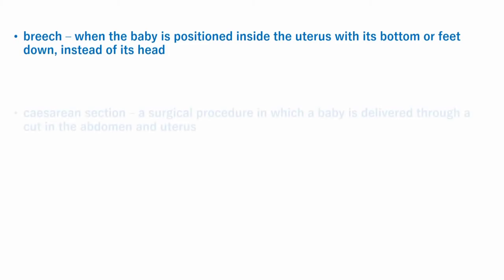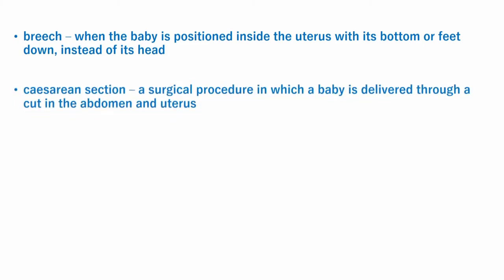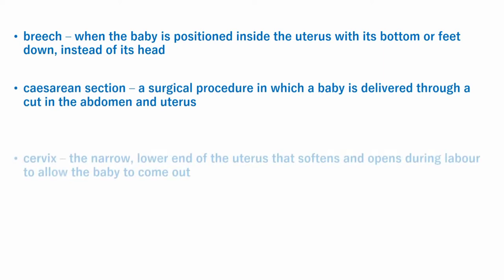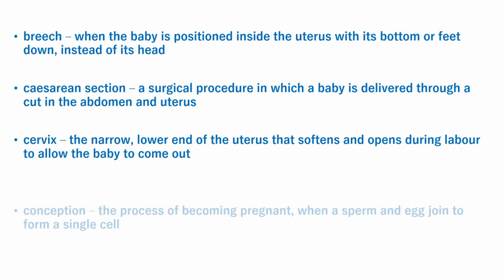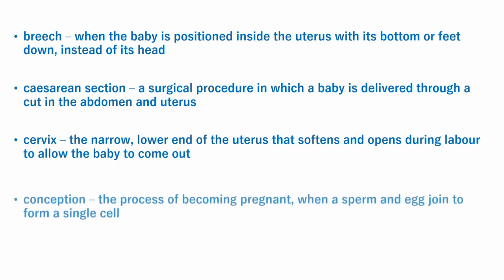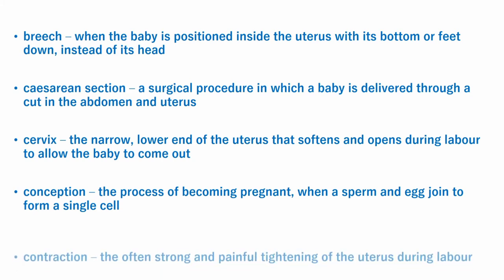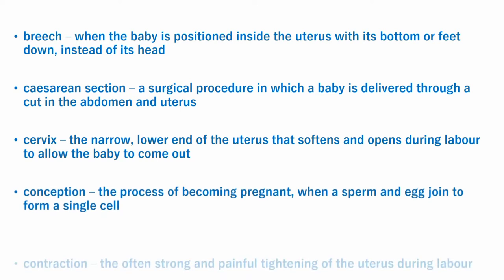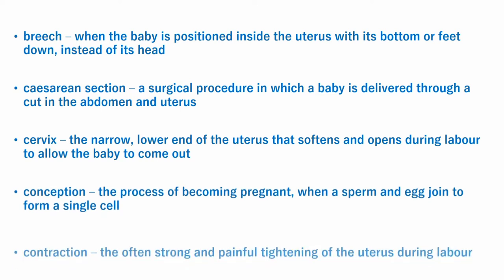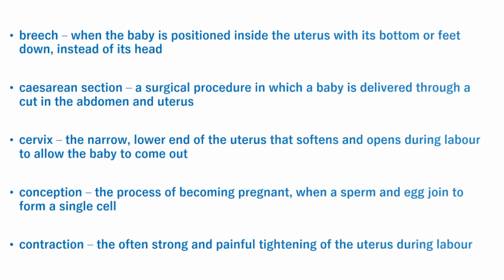Footling breech is where one or both feet are presenting. Cesarean section (C-section) is a surgical procedure in which a baby is delivered through a cut in the abdomen and uterus; low transverse incisions are most common. Cervix is the narrow lower end of the uterus that softens and opens during labor to allow the baby to come out. Conception is the process of becoming pregnant when a sperm and egg join to form a single cell. Contraction is the often strong and painful tightening of the uterus during labor.